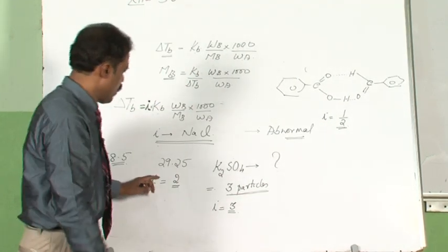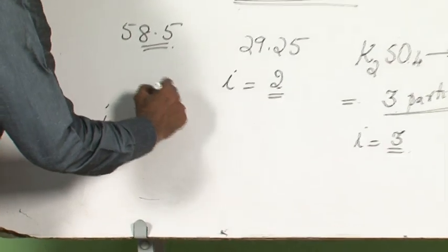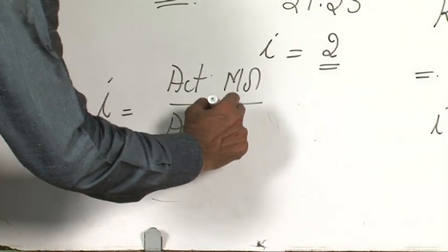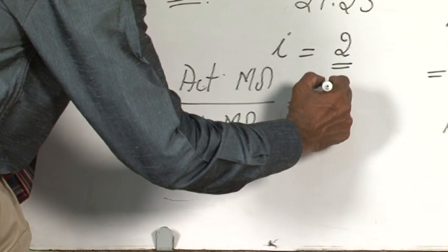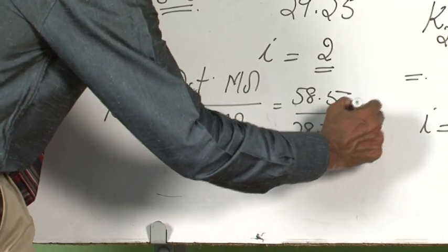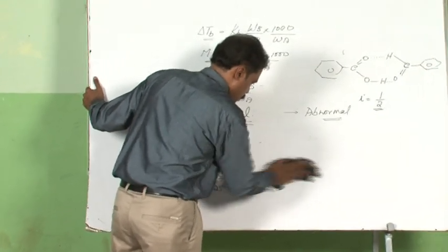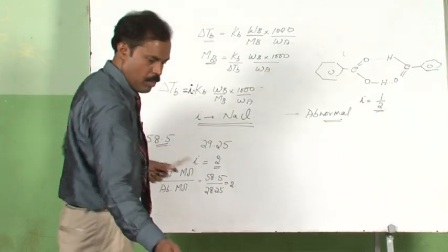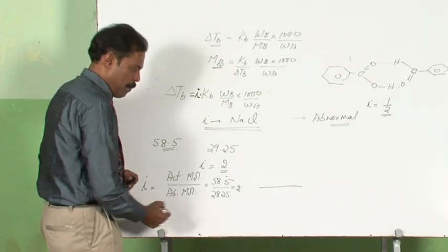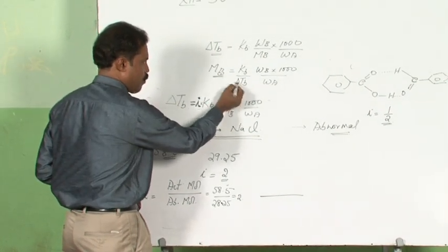You can get i by various methods. One method is: actual molecular weight divided by abnormal molecular weight. The actual molecular weight of sodium chloride is 58.5 and the abnormal molecular weight is 29.25, giving a value of i equal to 2. In terms of colligative property, you write the reverse of this because molecular weight and colligative property are inversely related.